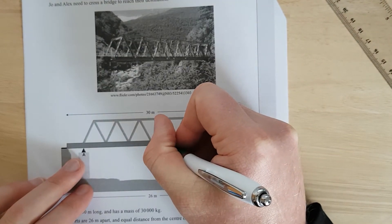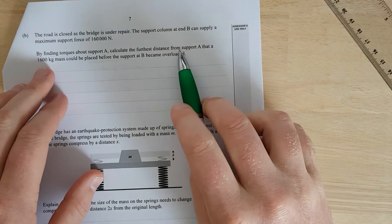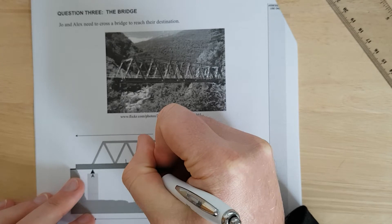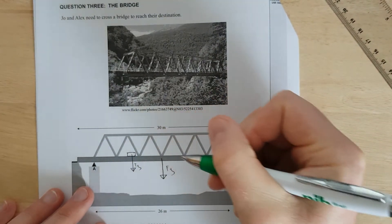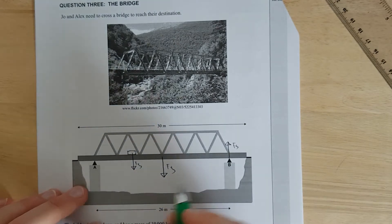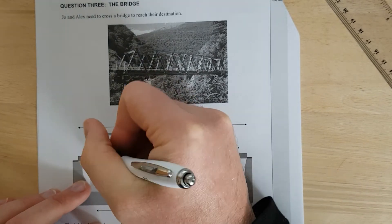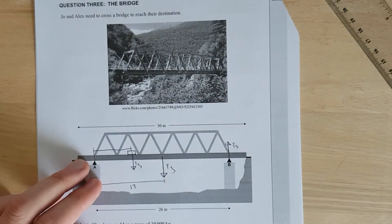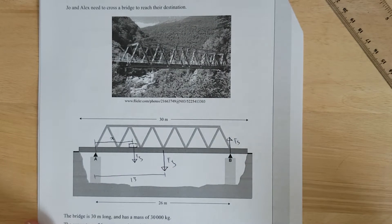So we'll draw our force diagram. We're going to have the mass of the bridge, FG acting downwards. We're going to have the support force at B, FS. And we're going to have from support A a mass of 1,600 kilograms. This distance here is 13 because it's half of 26. And this distance here from A, we'll call that X because it's horizontally and it's positively to the right.